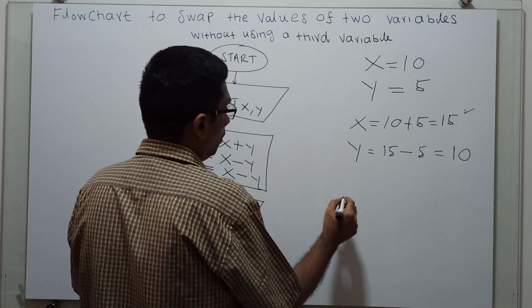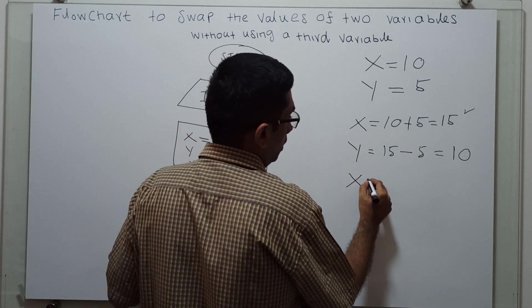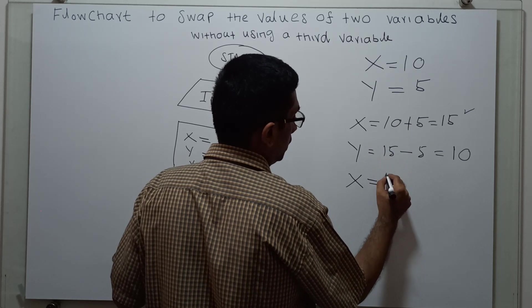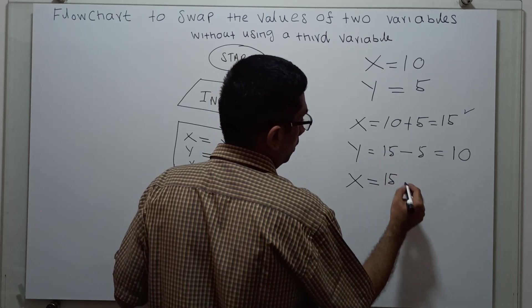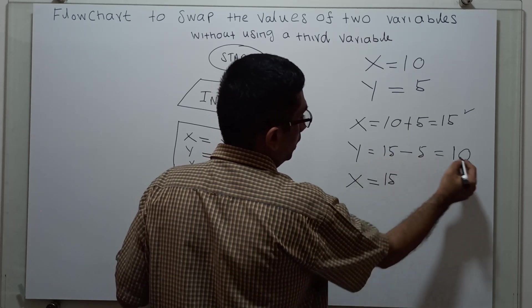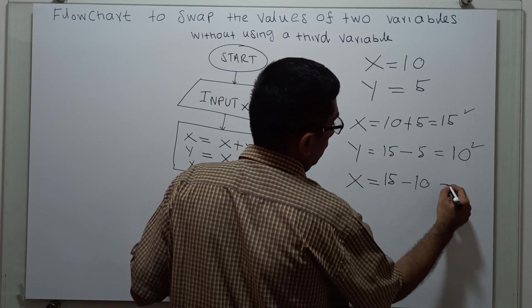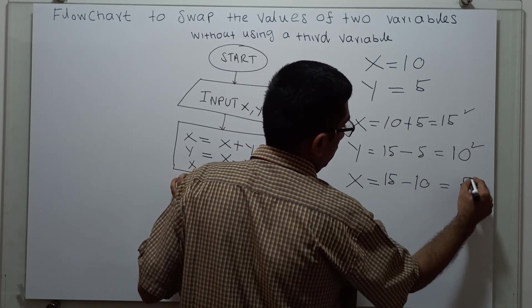Again, x equals x minus y. x value is 15, and the y value is now 10. 15 minus 10 equals 5.